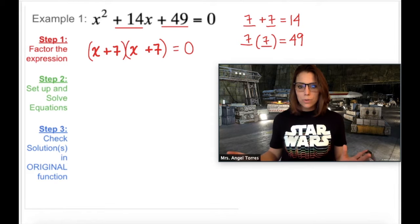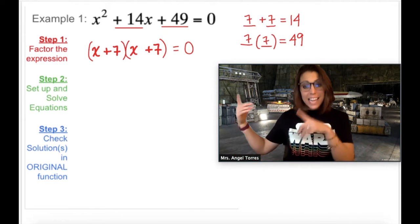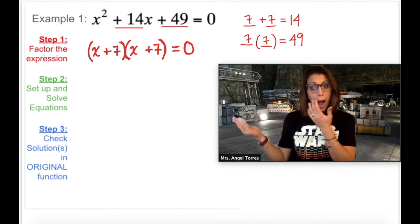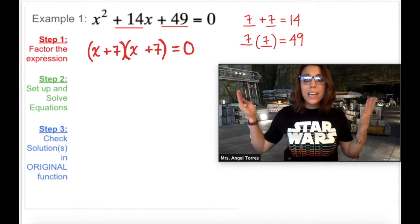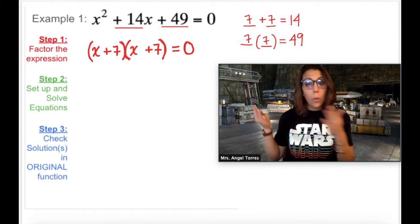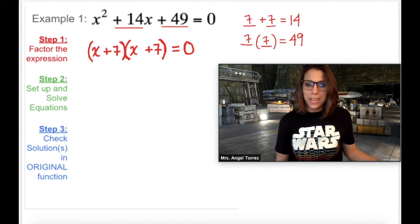So what did we just do? We just took a quadratic out of standard form and converted it into intercept form. And why did we just do that? Because now we can use the zero product property. Now we can set up and solve equations or just use mental math to figure out what our values of X are. So go ahead and finish solving from here.